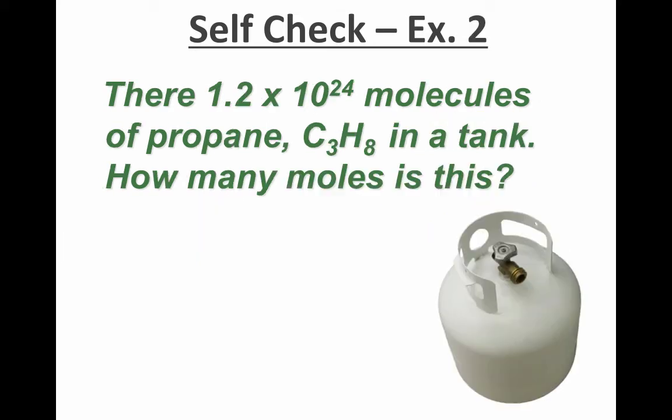Our next example says that there are 1.2 times 10 to the 24th molecules of propane, C3H8 in a tank. How many moles is this? So in this problem, we're looking for moles. I'm going to start my problem by setting up the units for the unknown over on the right side. Then I'm going to write down the given, which is 1.2 times 10 to the 24th molecules. Now be careful when you're working with these units.